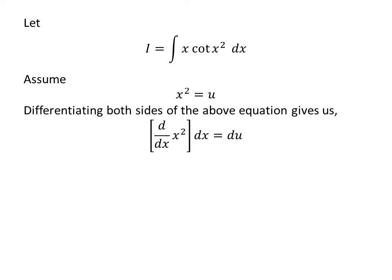Taking differential of both sides gives us derivative of square of x times differential of x is equal to differential of u. As derivative of square of x is 2 times x, so 2 times x times differential of x is equal to differential of u.